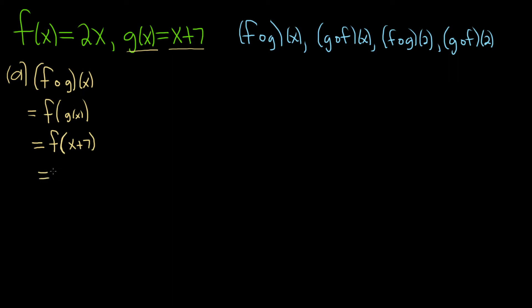Then you look at f of x, because this is f. This is f of x plus 7. Well, f of x is just 2 times x. So f of x plus 7 is just going to be 2 times x plus 7. So this basically means you replace x with x plus 7.